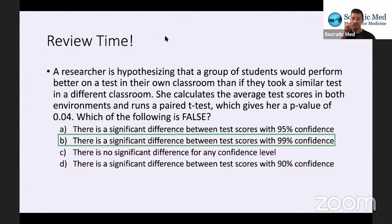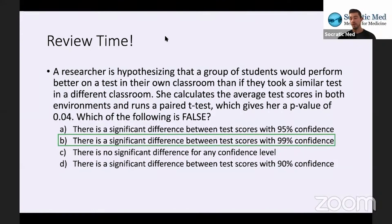So A is true and not the answer. You can also eliminate C, because C says there's no significant difference for any confidence level — but at the 95% confidence level we do see a significant difference, so A and C are both incorrect answers. Option D says there is a significant difference with 90% confidence. For 90% confidence, alpha would be 0.1, and P equals 0.04 is less than 0.1, so there is definitely a significant difference with 90% confidence.